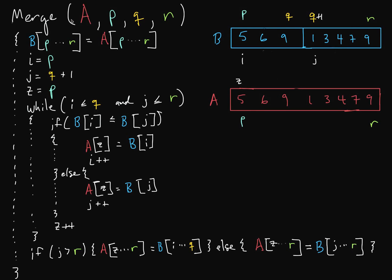Our arguments here: A is our original array, our starting index of this iteration of merge sort, our Q index which marks basically the first half of our sorted array or section, and R is the end. The first thing we do when we merge these two things is make a copy of this section of A into an array called B.